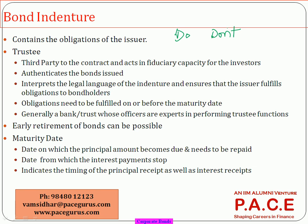The indenture also specifies how much will be paid and when, what would happen if the company defaults on payment, any collaterals, and whether the company can call back the bond in the middle or whether it will go until maturity. Whatever is written in the bond indenture, the issuer is mandatory bound to stick to those things and ensure the bond fulfills its obligations.